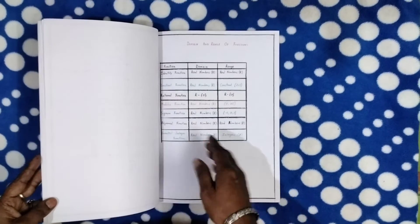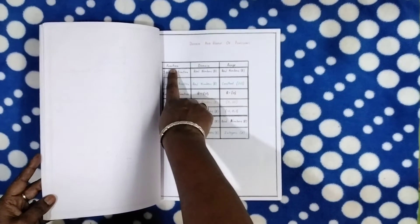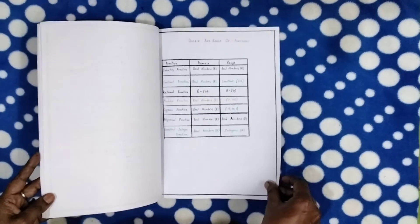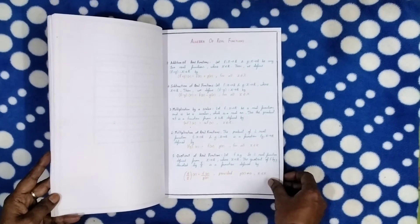Then what is domain and range of all these functions - he made a table to tell what's the function, what's the domain, and what's its range. On the next page he's given some algebra of real functions.